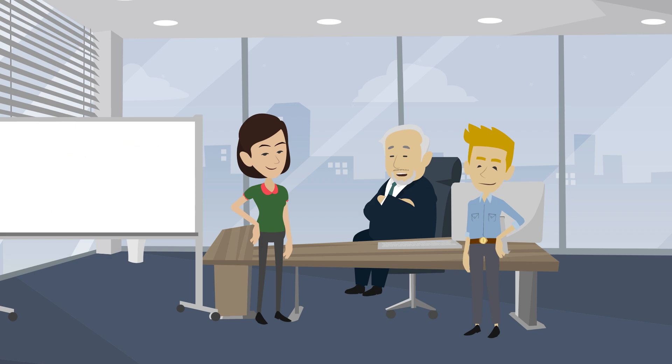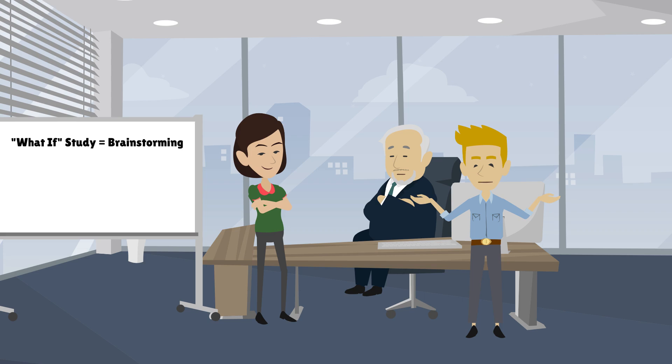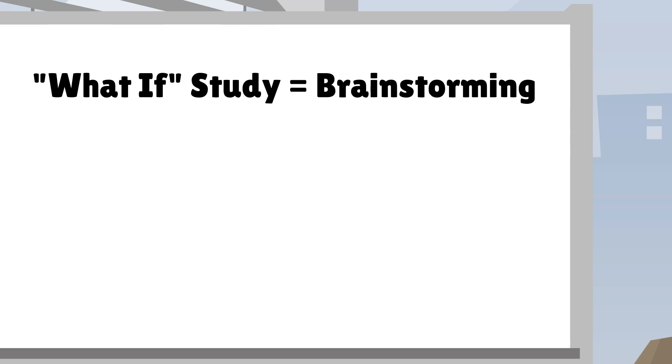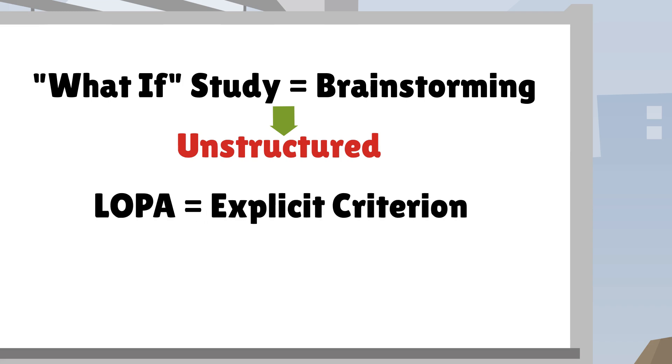What PHA methodology should we use? We could do a what-if. It'll help us brainstorm what could go wrong. Whenever I'm in a what-if, it always turns into a long, unstructured debate. Maybe we should do a layer of protection analysis, or a LOPA, instead. It has a more explicit decision criterion for whether or not the risk is acceptable.